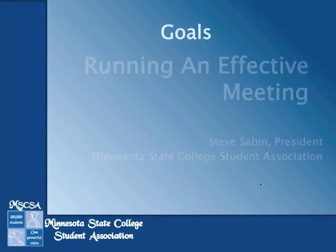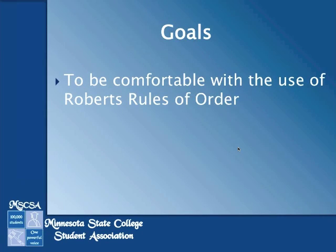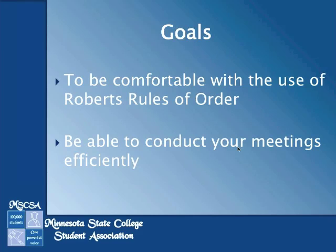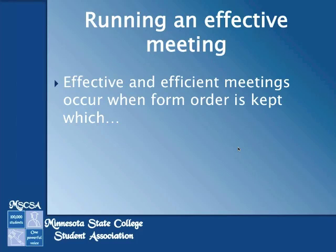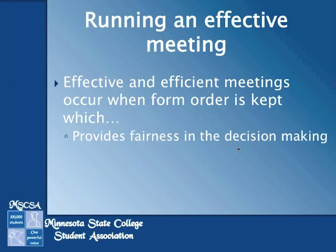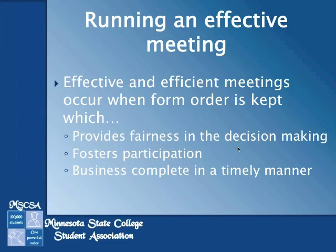So, running an effective meeting. A few goals we're going to be covering include allowing you to be more comfortable with the use of Robert's Rules of Order, as well as being able to utilize them and conduct your meetings more efficiently and effectively. And also to allow you and your senators or club members to have fun. An effective and efficient meeting occurs when you're able to form and keep order throughout the meeting, which provides for fairness in the decision making process, fosters participation from all members, and allows your business to be completed in a timely manner.